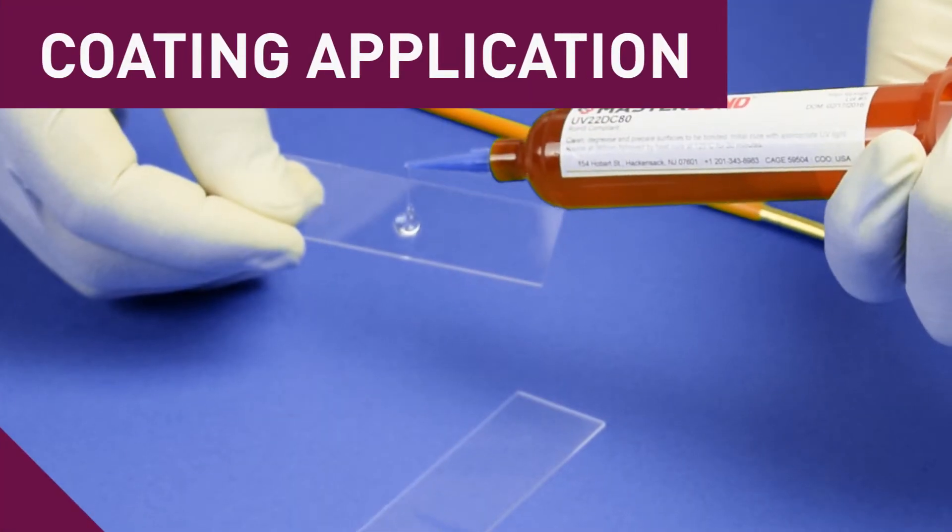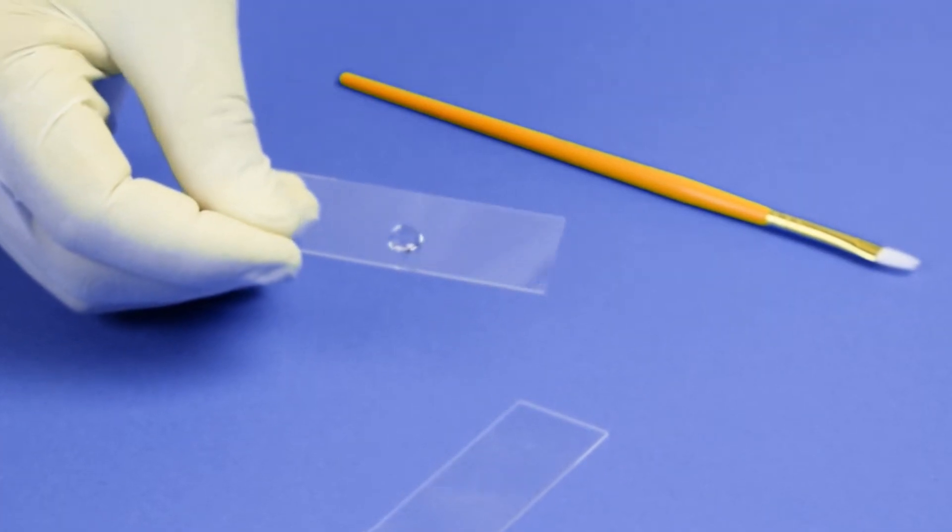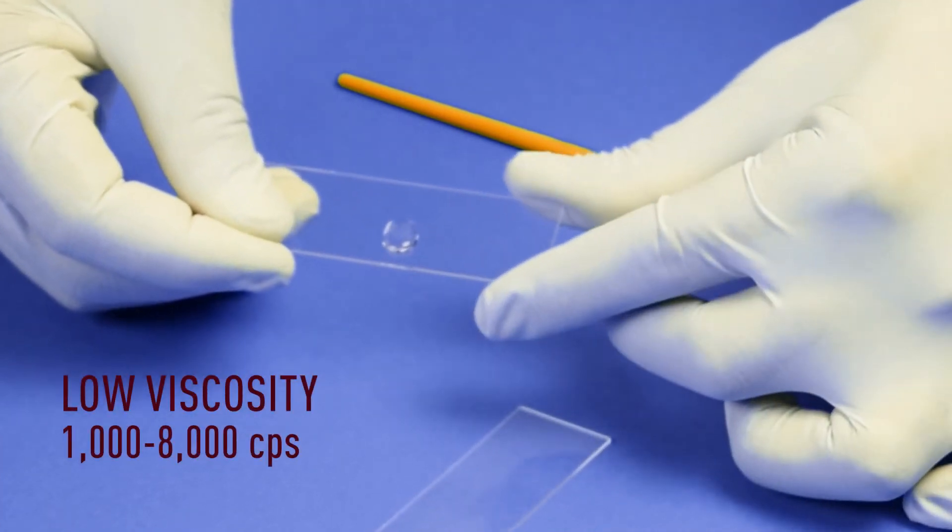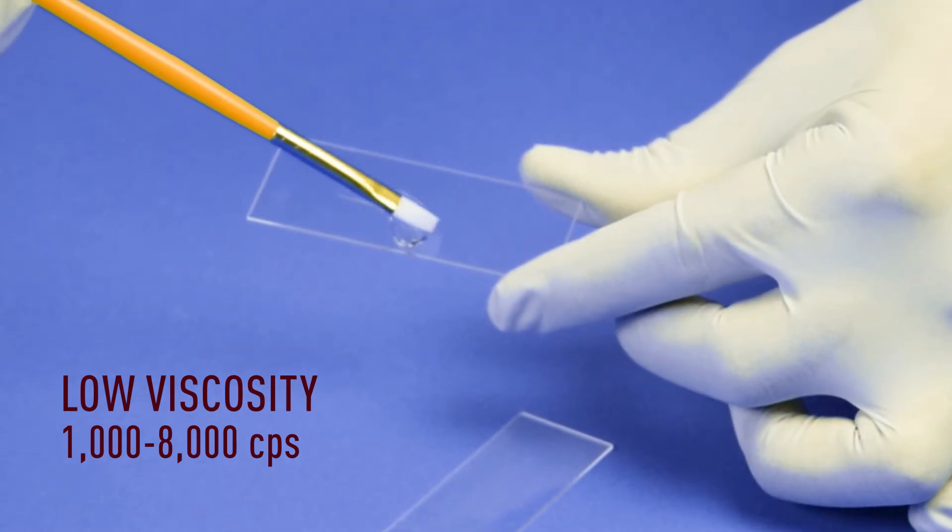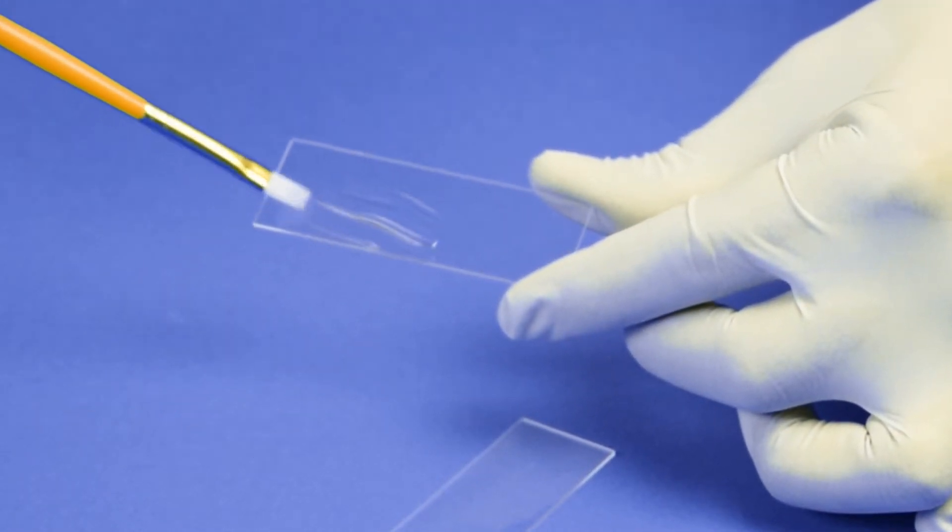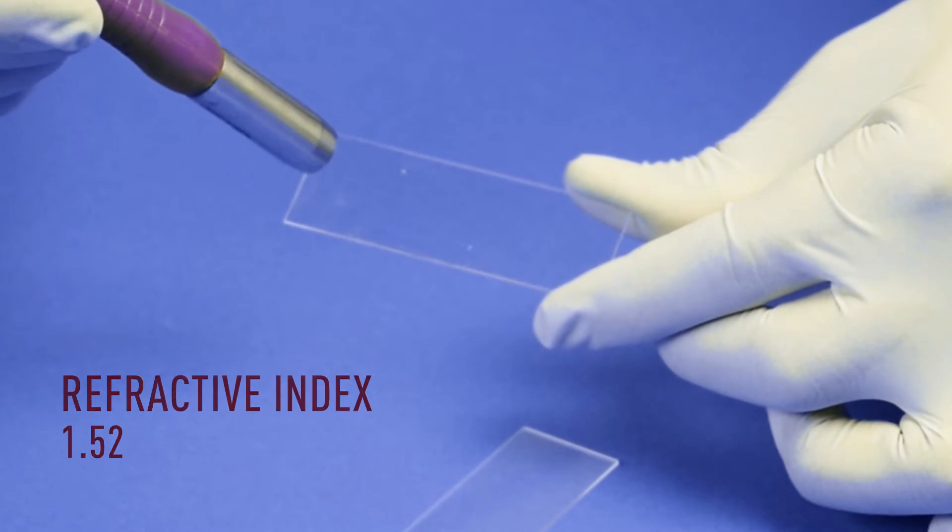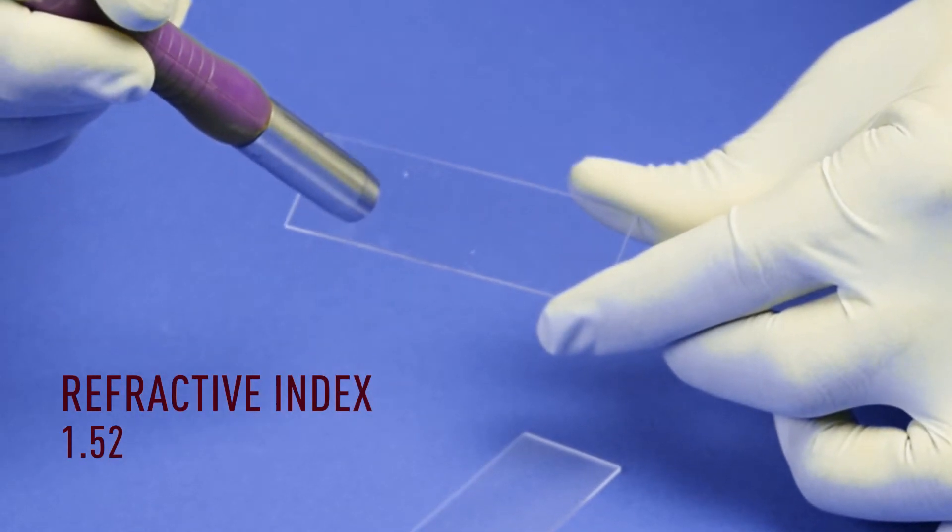Using a syringe applicator, UV-22DC80-1 can easily be applied in a thin layer to coat a glass substrate. It cures in seconds under UV light and exhibits superior optical clarity.